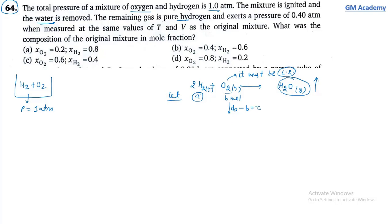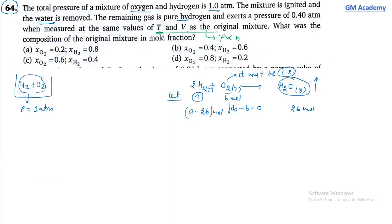Initially, total moles (A + B) ∝ pressure 1 atm. After reaction, remaining H₂ moles (A - 2B) ∝ pressure 0.40 atm. Dividing: (A - 2B)/(A + B) = 0.40/1.